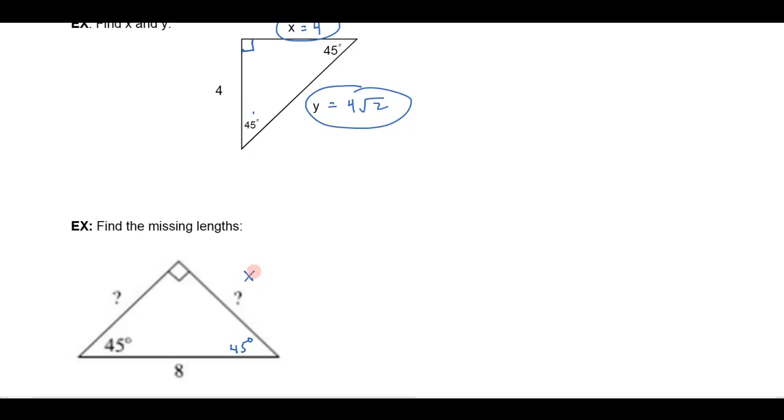Well, if I were to just call this side here x for the time being, what I know is that this hypotenuse 8 has to equal this leg x times the square root of 2. So this leg right here has to be the hypotenuse divided by the square root of 2.